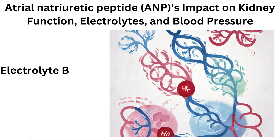Electrolyte Balance: ANP promotes the excretion of sodium, known as natriuresis, by inhibiting sodium reabsorption in the renal tubules, particularly in the distal tubules and collecting ducts. This results in the loss of sodium in the urine. By increasing sodium excretion, ANP indirectly promotes the excretion of water, helping to reduce blood volume.